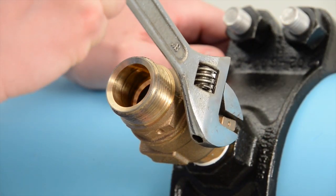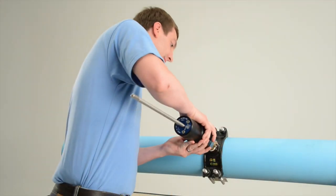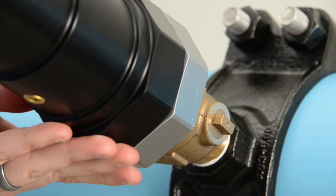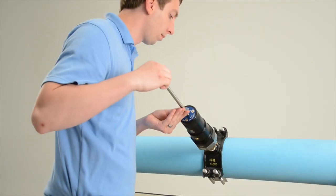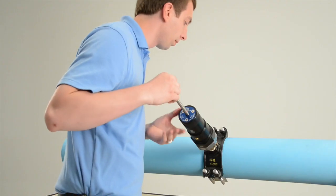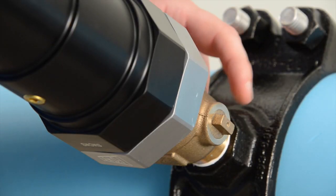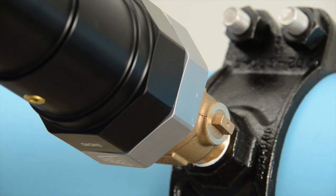Open the valve. Hand tighten the SimTap onto the corporation stop. Gently push the shaft through the open valve until the pilot bit makes contact with the pipe. It is important to check that the valve is fully open to prevent any unnecessary damage to the valve or the SimTap.